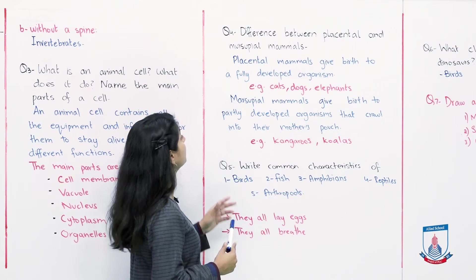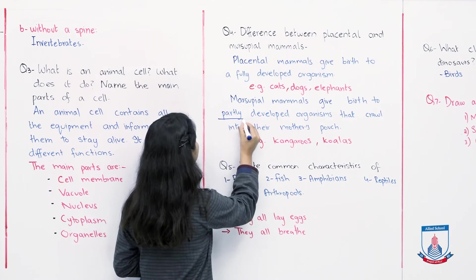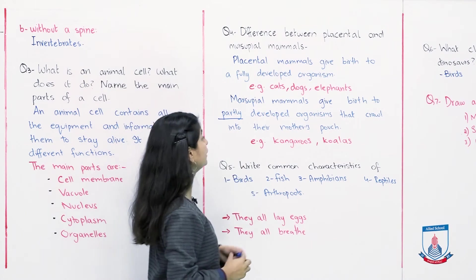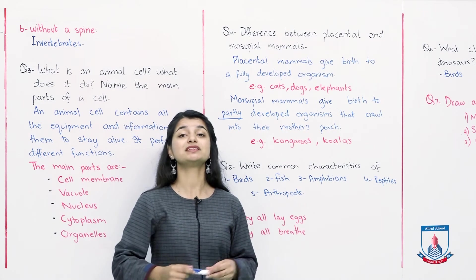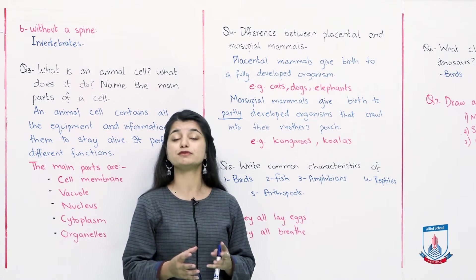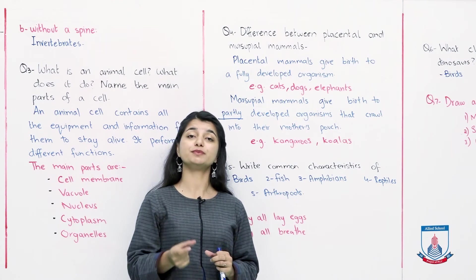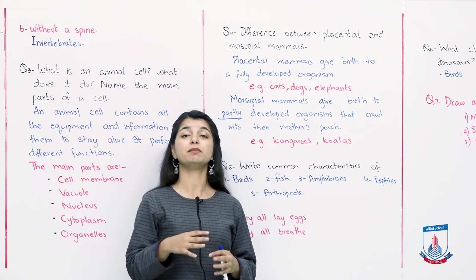When the organism is born, then they are fully developed. Obviously, it needs nutrition from its mother, but there is no further development. It has been formed after its growth inside its mother. However, marsupial mammals give birth to partly developed organisms.